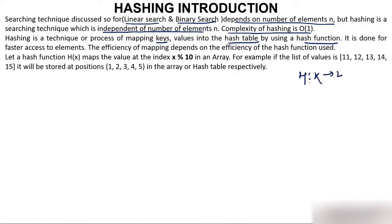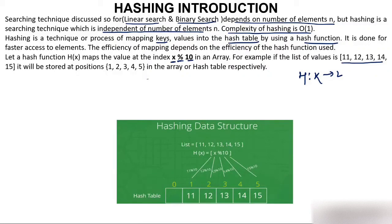Suppose I have values — the keys are 11, 12, 13, 14, and 15 — and I'm applying a hash function which is mod, dividing by 10. So when you have to store 11, you take mod of 11 with 10, the remainder is 1, so you store 11 at index 1. When you store 12, you take 12 mod 10, you get 2, so you store 12 at index 2.